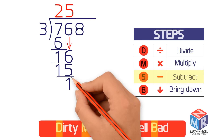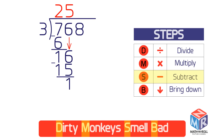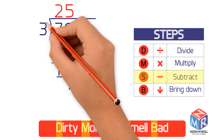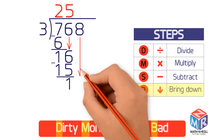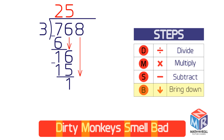After you subtract, the result should be less than the divisor. 1 is less than 3, so it's okay. Then bring down the next number, 8, to make the new number 18.